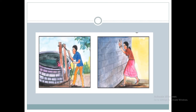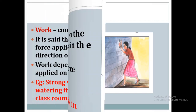Ramesh can complete his work of lifting water from a well — he is lifting water. But Rashida cannot move the wall even after several attempts. So in these two pictures, which is said to be work? Work is done only when the force applied on an object makes the object move in the direction of the force. Ramesh is lifting water from the well, so he is doing work. Rashida cannot move the wall, so work is not done.